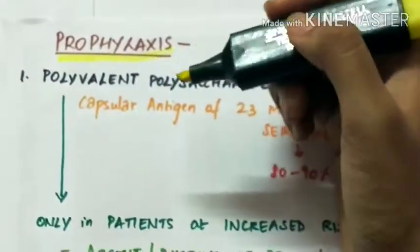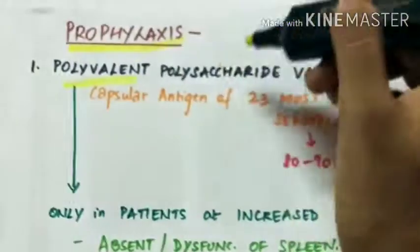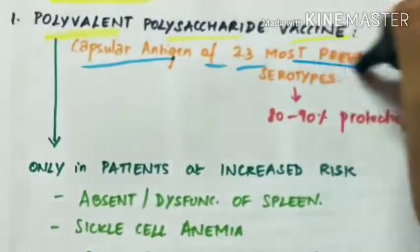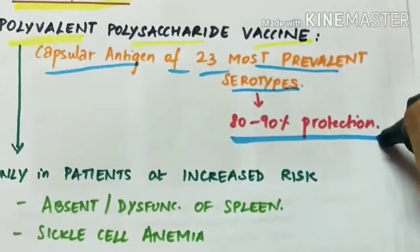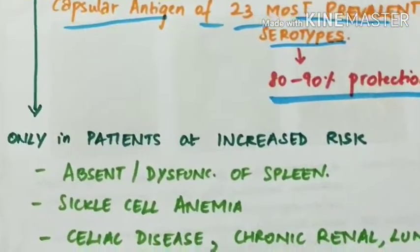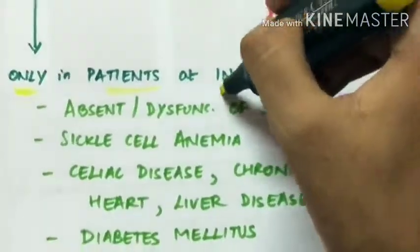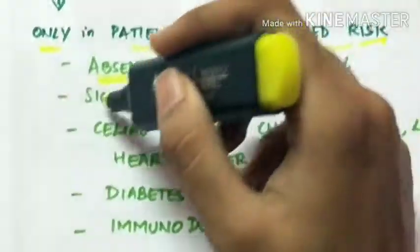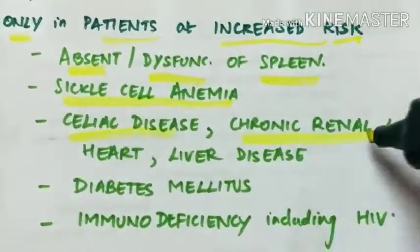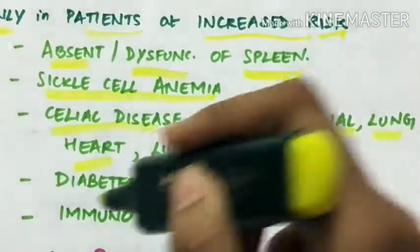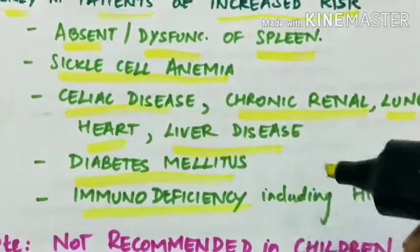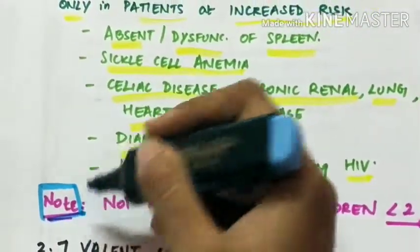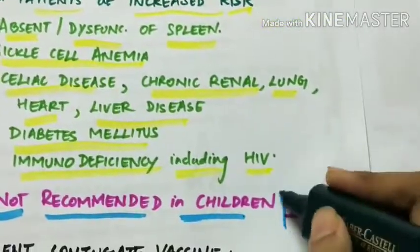Prophylaxis. This includes two types of vaccines. First is polyvalent polysaccharide vaccine. This is made up of capsular antigen of 23 most prevalent serotypes which provides 80 to 90% protection. This polyvalent polysaccharide vaccine is given only for patients who are at increased risk which include patients with absent or dysfunction of spleen, those with sickle cell anemia, celiac disease, chronic renal lung heart and liver diseases, diabetes mellitus, and immunodeficiency including HIV. Important thing to note here is the polyvalent polysaccharide vaccine is not recommended in children who are under 2 years of age.